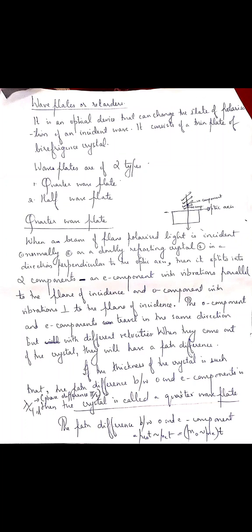When a beam of polarized light is incident on a wave plate, the emerging beam will also be polarized, but its state of polarization will be changed.